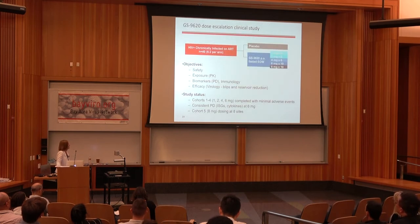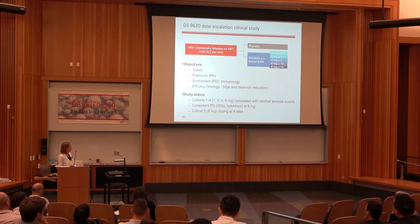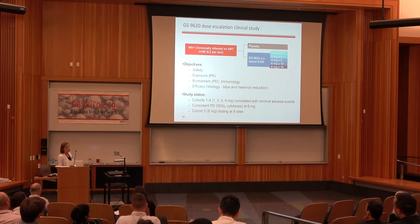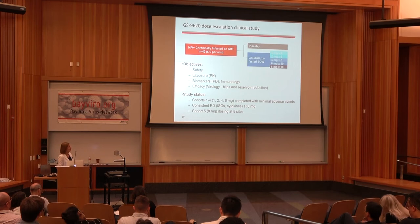Our TLR7 agonist GS9620 has already completed phase 1A studies in healthy volunteers and is currently being administered to HIV patients on ART. We're going through a slow dose walk-up from one milligram to eight milligram cohort. At earlier doses we didn't see much in the way of pharmacodynamic markers, but at the six and now eight milligram dose we're finally beginning to see some peripheral cytokines. We'll be looking to see if there are transient viral blips suggesting latency reversal, and doing reservoir measurements to see if we've reduced the reservoir in these patients.